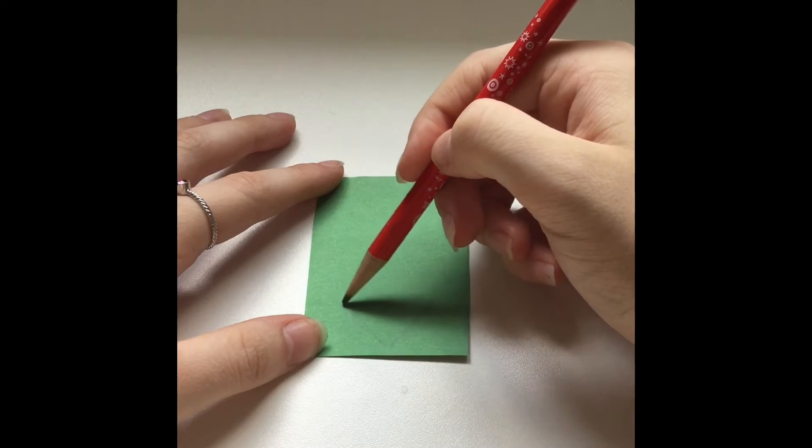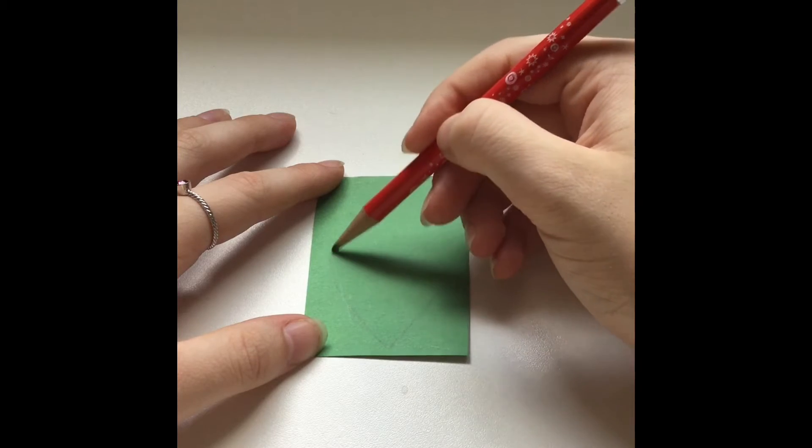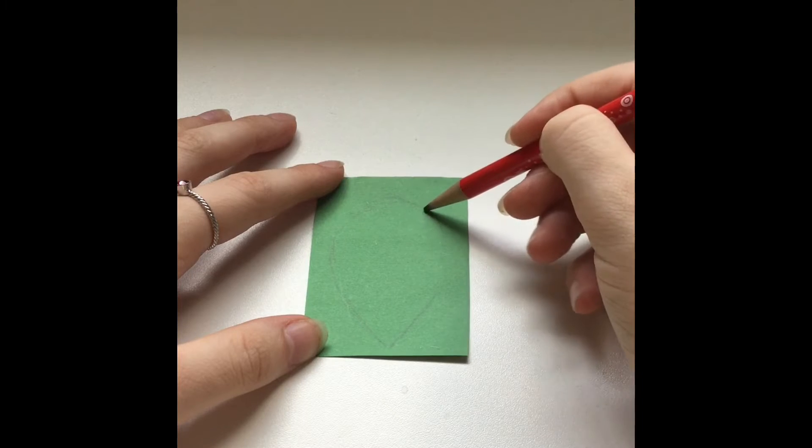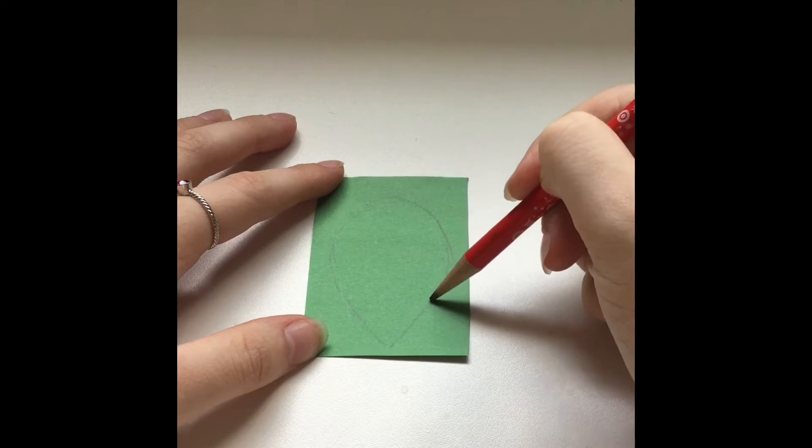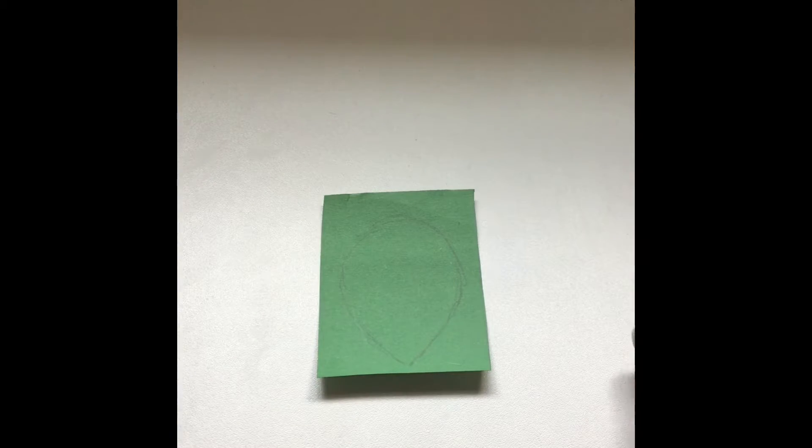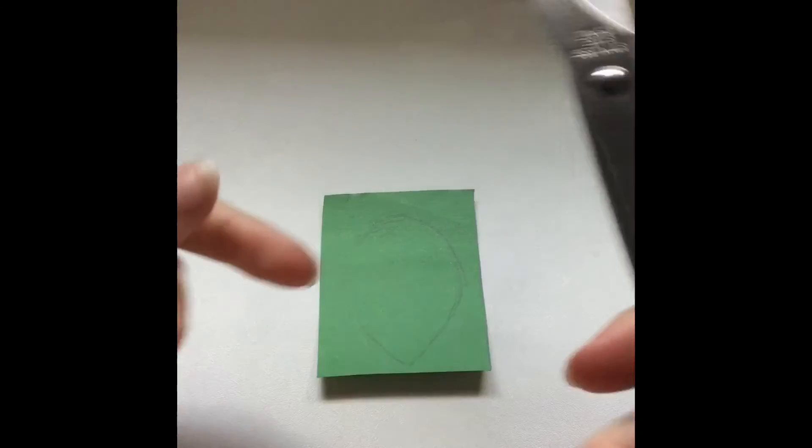Once you draw like half the triangle, then you just kind of round it out. Like so. And once you finish that, you're going to take your scissors and cut it out.